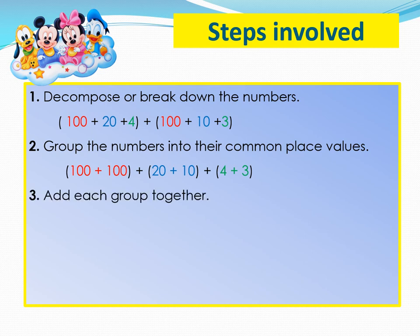Step number 3. Add each group together. 100 plus 100 give you 200. 20 plus 10 give you 30. 4 plus 3 give you 7.